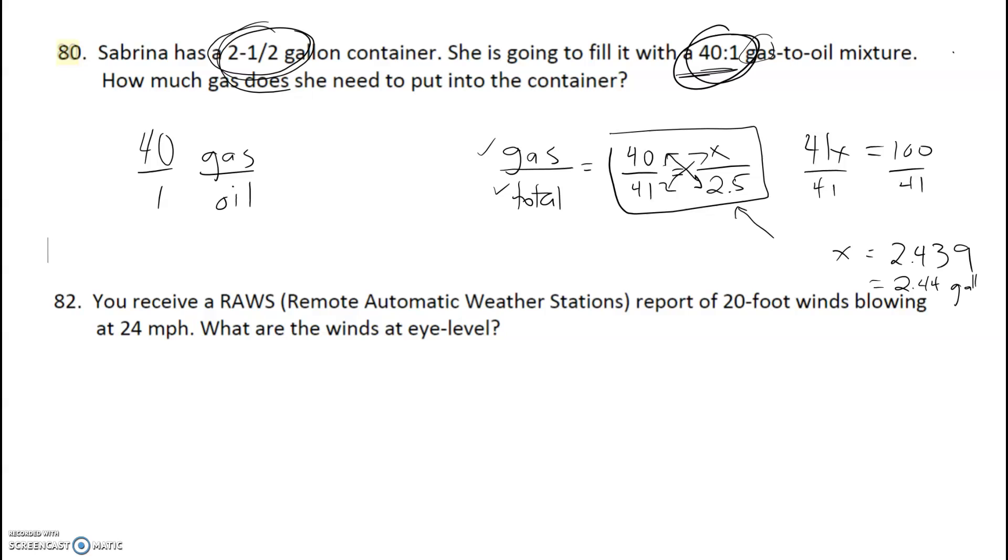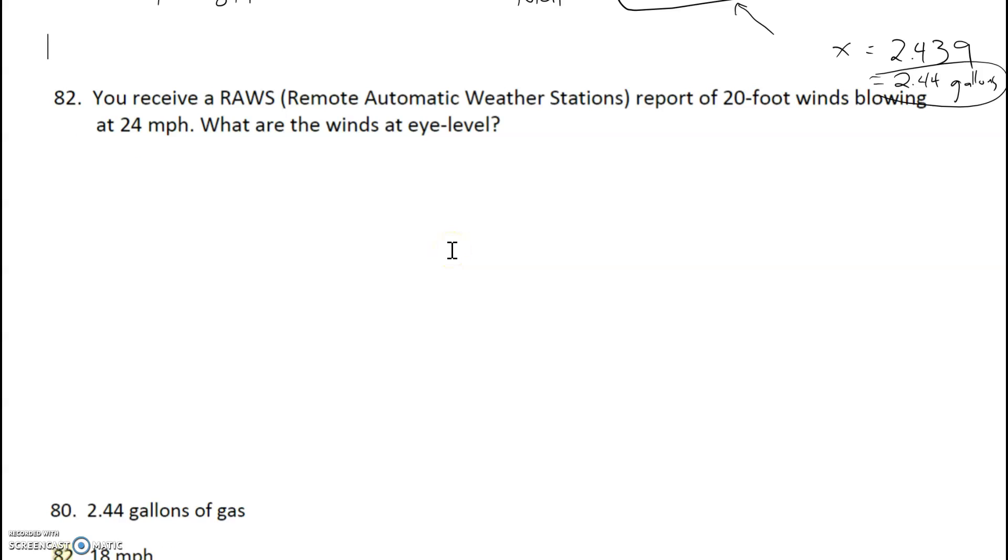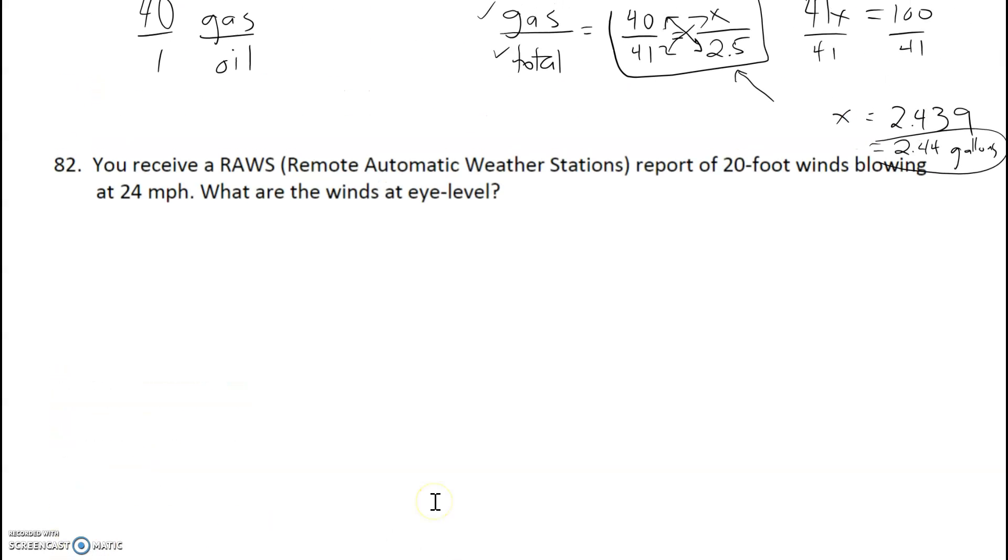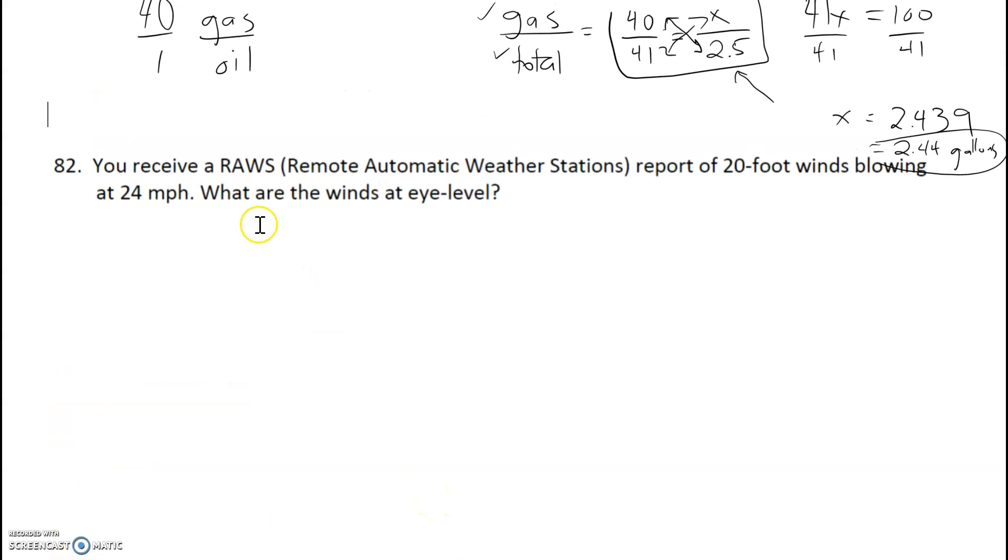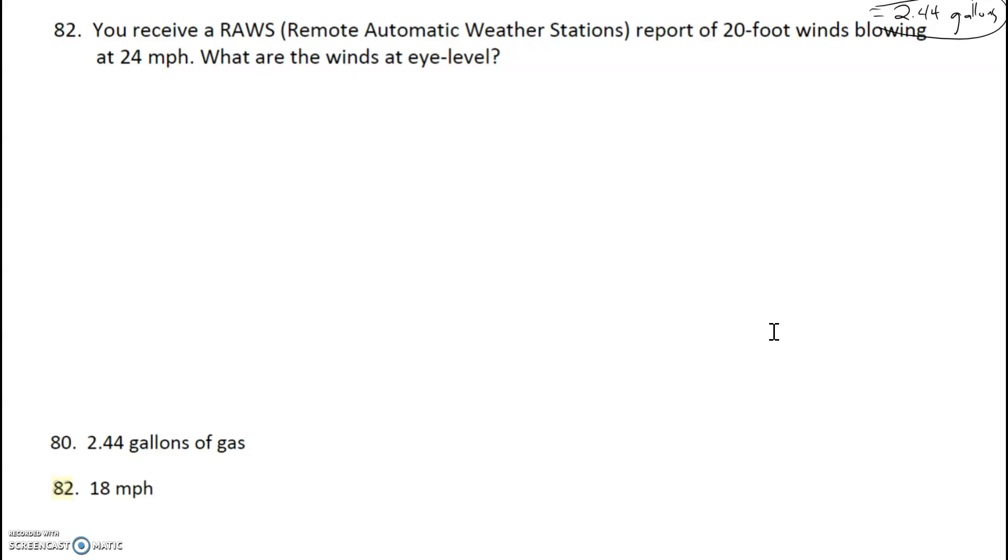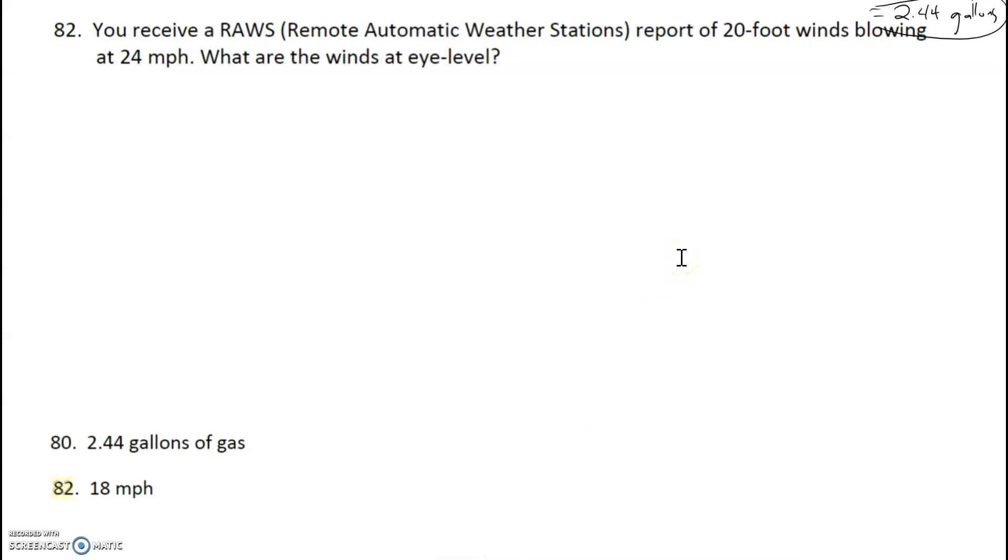Okay, next question. There's the answer, 2.44, yes, what we got. The next one should be 18. You receive a Remote Automatic Weather Station report of 20-foot winds blowing at 24. What are the winds at eye level? So if you look at the directions for this one, they say something like this: eye level winds are three-fourths of the 20-foot speed.